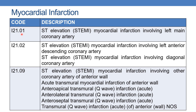The first code is I21.01 — ST elevation myocardial infarction involving left main coronary artery. The next code is I21.02 — STEMI involving left anterior descending coronary artery. I21.02 is also coded when the physician documents ST elevation myocardial infarction involving the diagonal coronary artery.